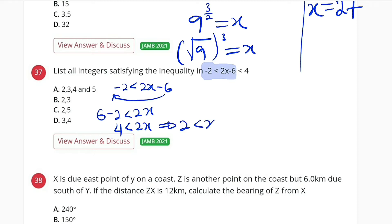So we have 2 < x. Then we combine the second inequality, 2x - 6 < 4. We can take this to the right-hand side. 2x < 10 because 6 plus 4 is 10.